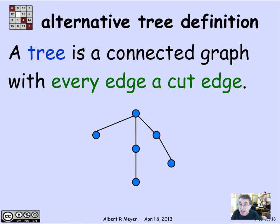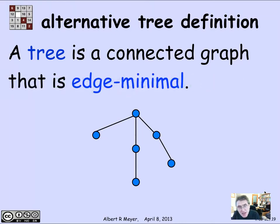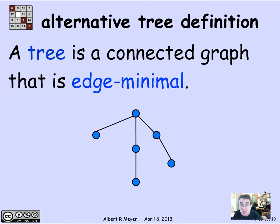That is, as soon as you cut any edge out of a tree it stops being connected. This yields another way to say that something is a tree: a tree is a simple graph that is connected and is edge minimal, which means that if you remove any edge it stops being connected. That's kind of the reason why trees are so important — if you're trying to figure out a way to get a whole bunch of vertices connected, a tree is going to have the minimum number of edges sufficient to get them all connected.